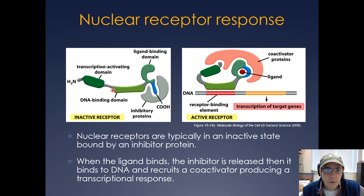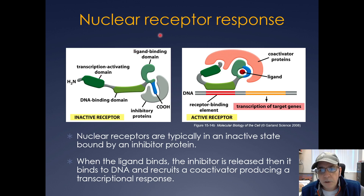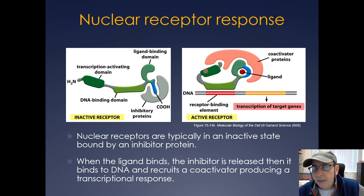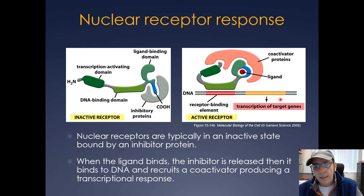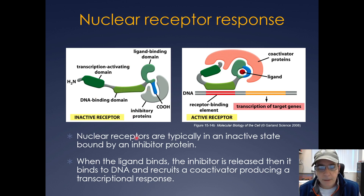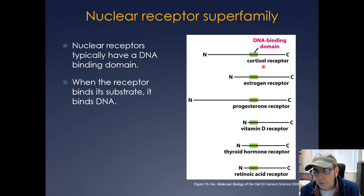Here's how nuclear hormone receptors work: they're often bound with an inhibitory protein, and they have a ligand binding domain, a DNA binding domain, and a transcriptional activation domain. When the hormone passively diffuses through the plasma membrane, it binds to the ligand binding domain, the inhibitory protein is released, a coactivator protein associates, and the receptor binds to DNA, eliciting a transcriptional response. The same thing happens with the glucocorticoid receptor and all nuclear hormone receptors.